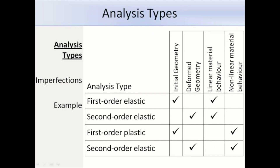There are four types of global analysis. First order elastic: initial geometry and fully linear material behaviour. Second order elastic: deformed geometry and fully linear material behaviour. First order plastic: initial geometry and non-linear material behaviour. And second order plastic: deformed geometry and non-linear material behaviour. Elastic methods can be used in all cases, but plastic methods may only be used where the material and cross sections satisfy specific requirements. Second order theory may be used in all cases, and first order theory can be used for non-sway frames or sway frames where allowances for second order effects are made.